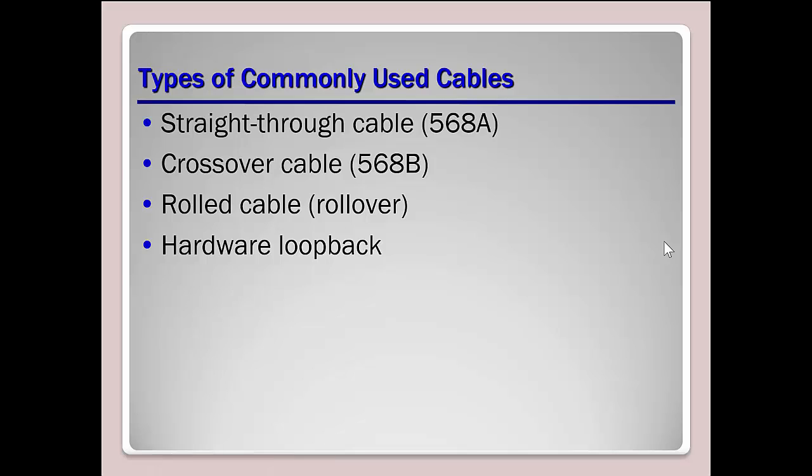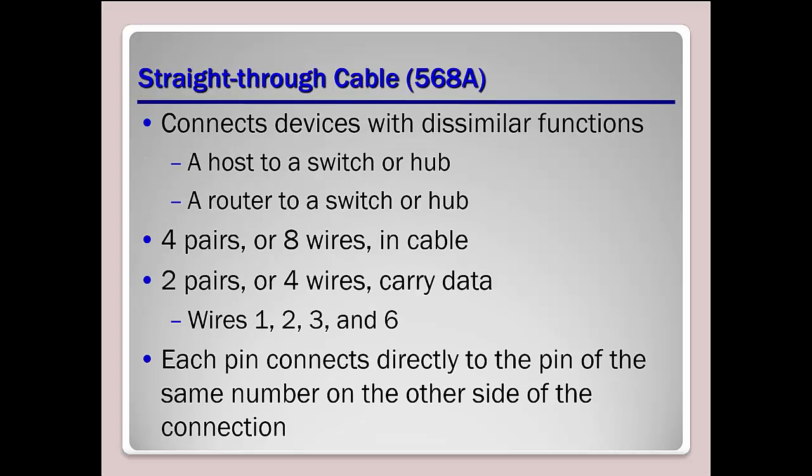Types of commonly used cables: a straight through cable uses the A wiring, a crossover cable uses B, a rolled/rollover cable, or a hardware loopback. A straight through cable connects devices with dissimilar functions — a host to a switch, such as a computer to a switch, or a router to a switch or hub.